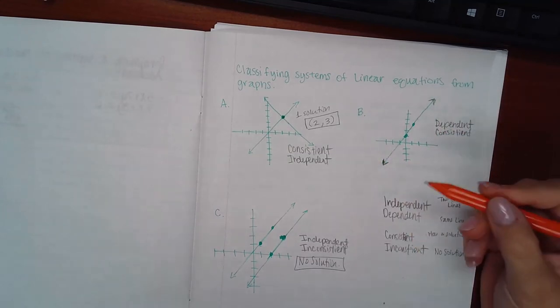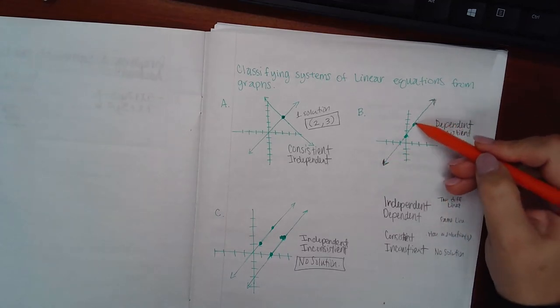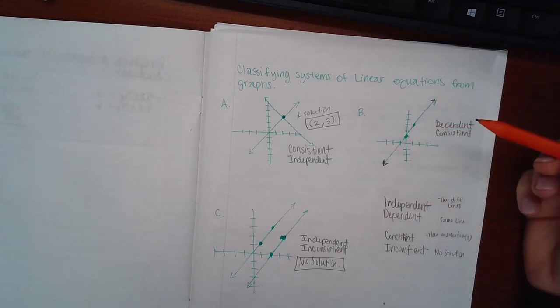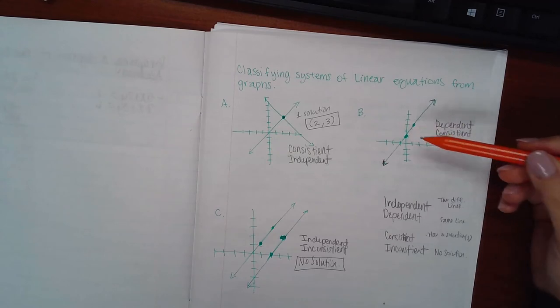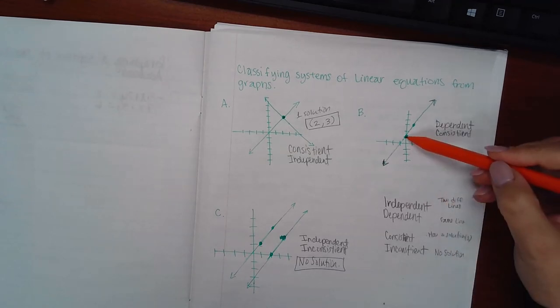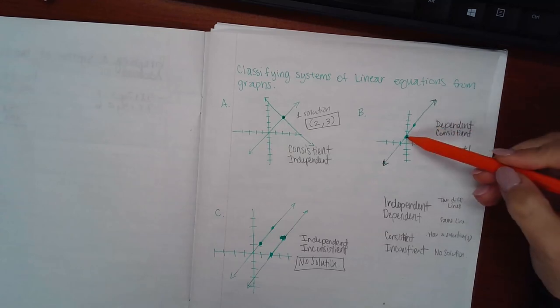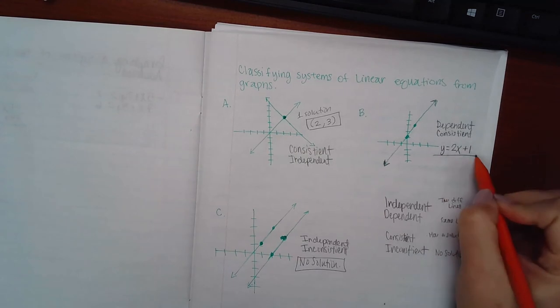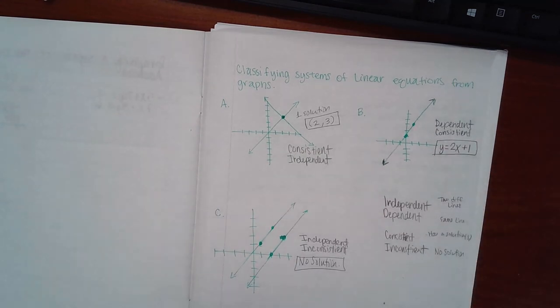Instead of trying to list all of those x and y coordinates, what we do is write the equation of this line. Since both graphs are represented by the same image, we can write the equation of that one particular image. So the y-intercept is 1, positive 1, and the slope is up one, two over one, so the slope is positive 2. This equation describes all the points that are on that particular image.